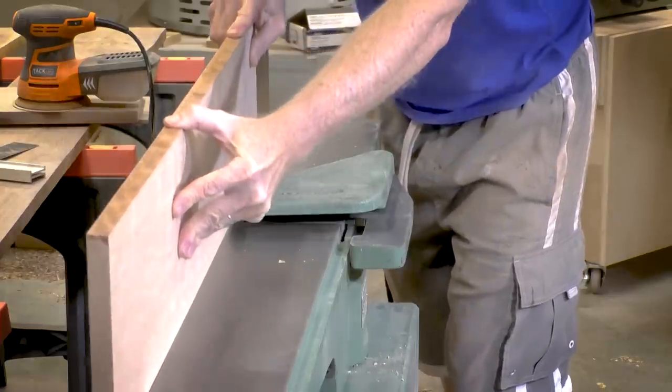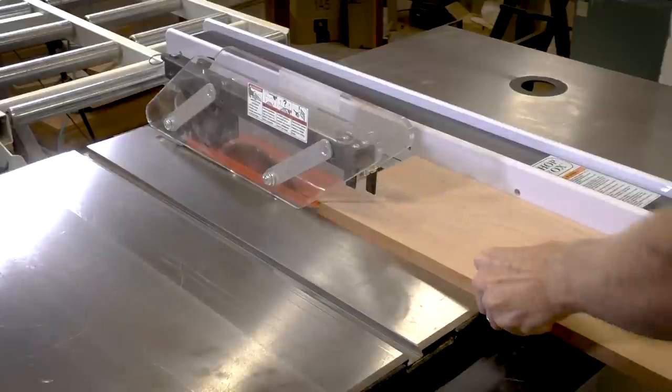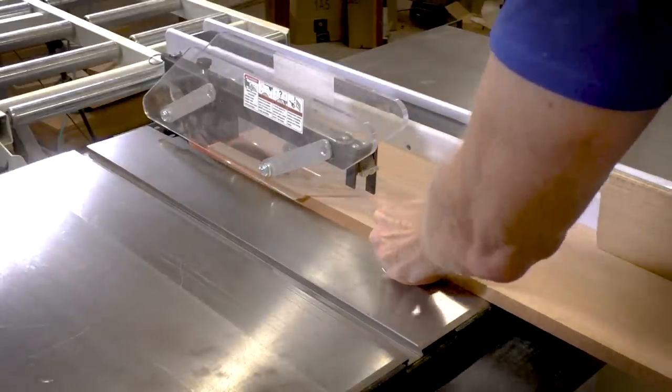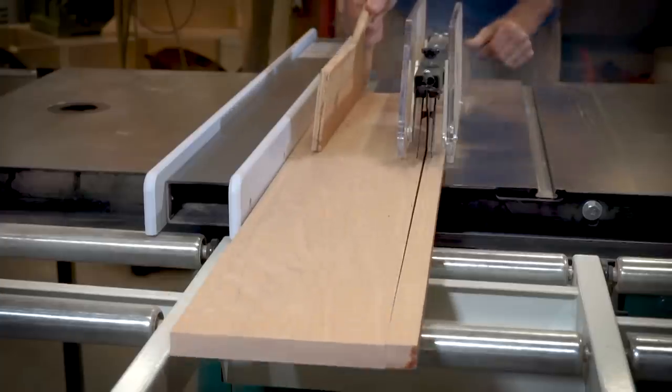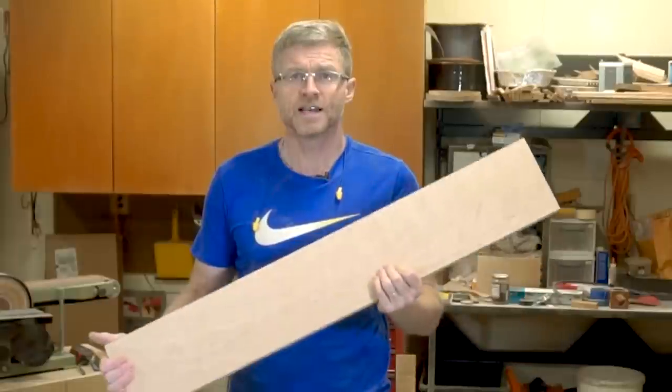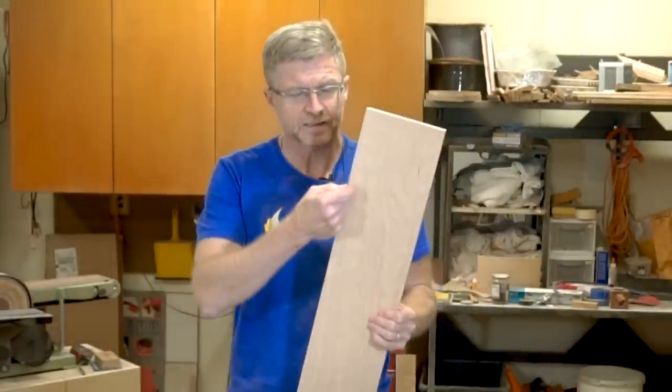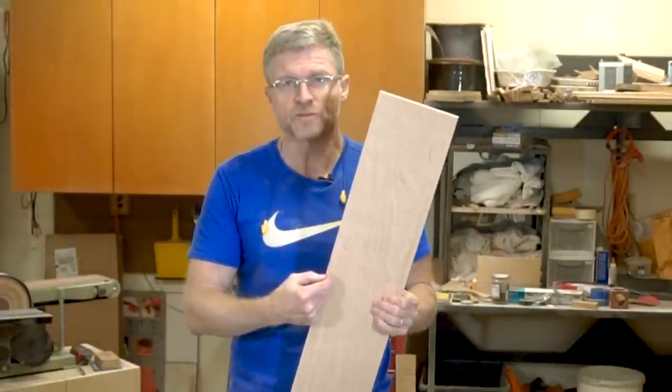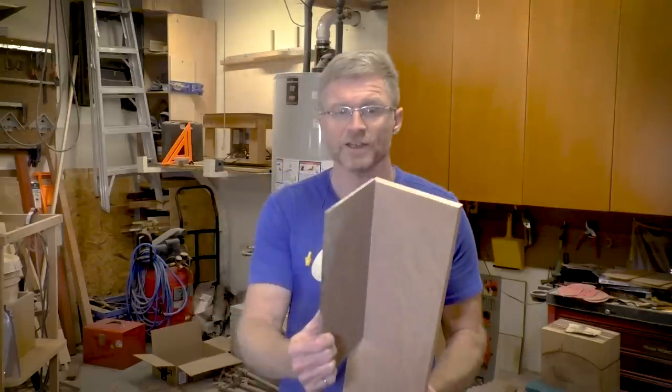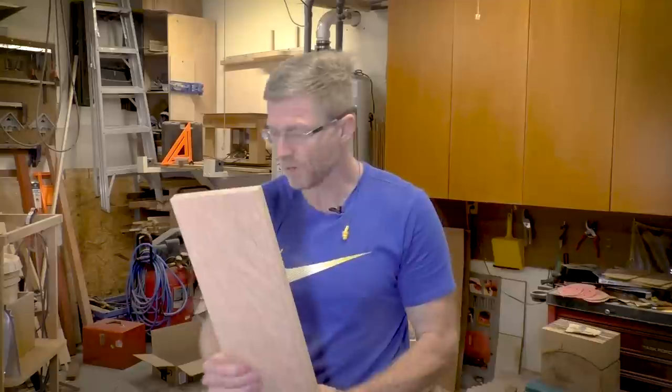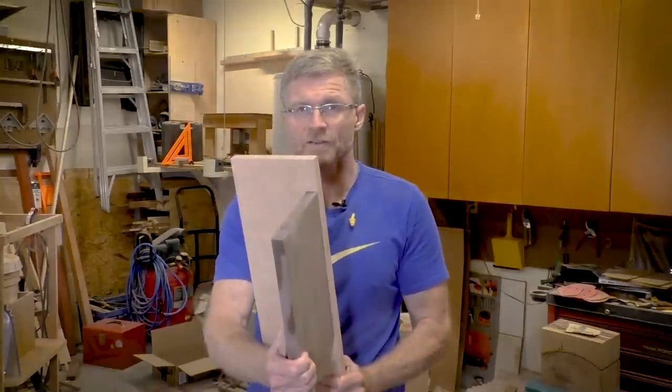I'm jointing one edge of the wood and then cutting it to width on the table saw. The box is sized to hold the remains of a 225 pound person so it should be big enough. For the sides I'm cutting a dado a quarter of an inch from the top, and the top piece will fit into that. Then I'm cutting a rabbet along the bottom where the bottom piece will fit.